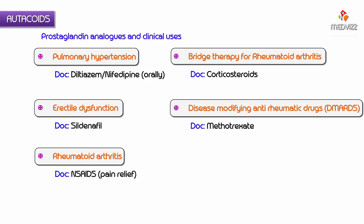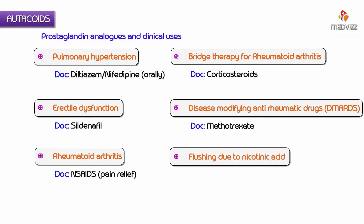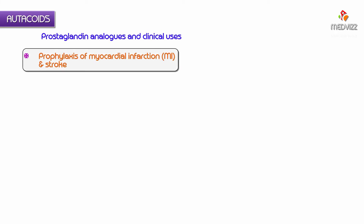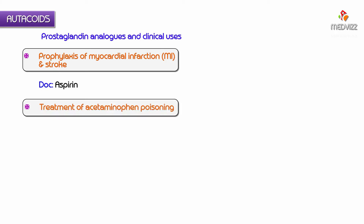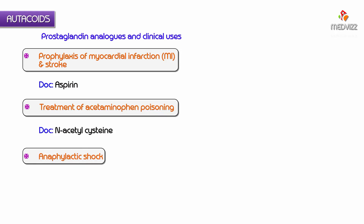The drug of choice for flushing due to nicotinic acid is aspirin. The drug of choice for prophylaxis of myocardial infarction and stroke is aspirin. The drug of choice for treatment of acetaminophen poisoning is N-acetylcysteine. The drug of choice for anaphylactic shock is adrenaline.